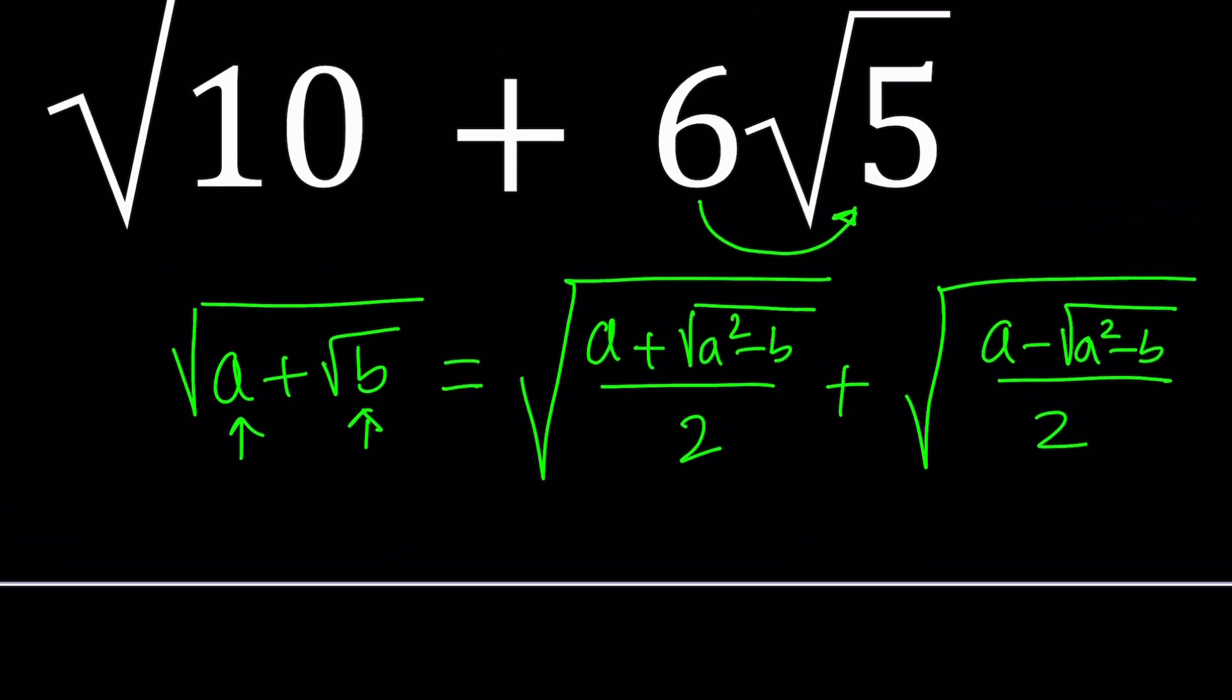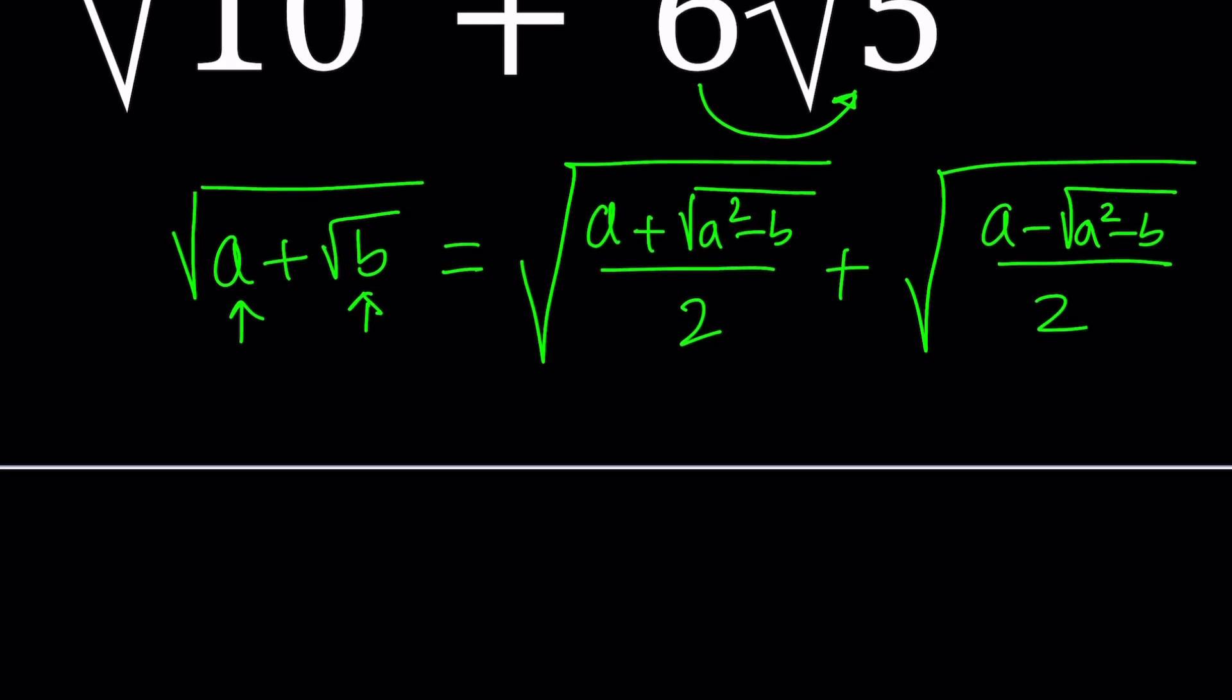But this problem, trust me, is going to be more interesting. Let's plug it in. How do you express 6 root 5? First of all, I can write it as square root of 36 times square root of 5, so that's going to be the square root of 180. So in this case, my a is 10 and b is 180.